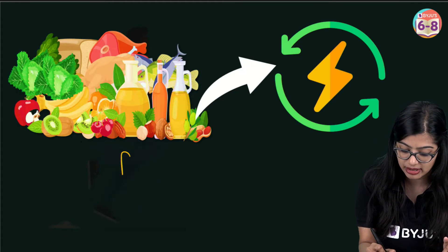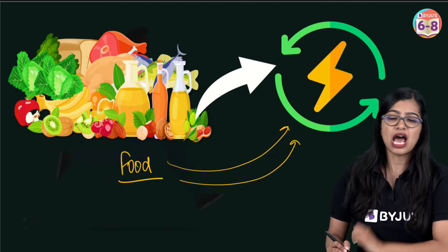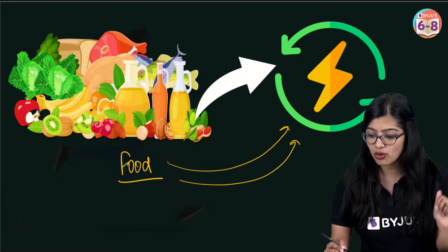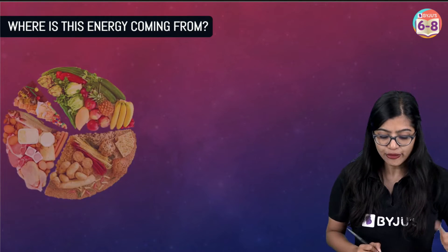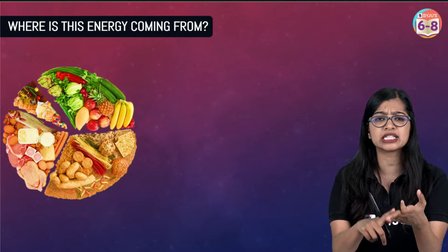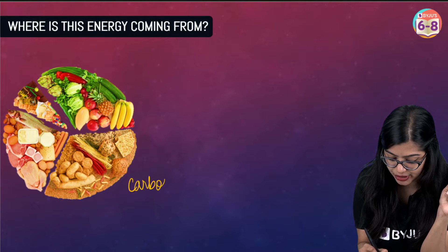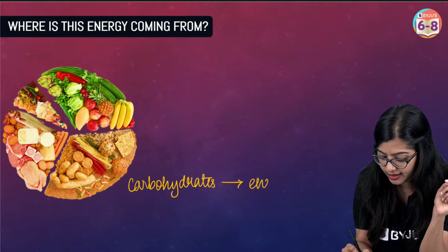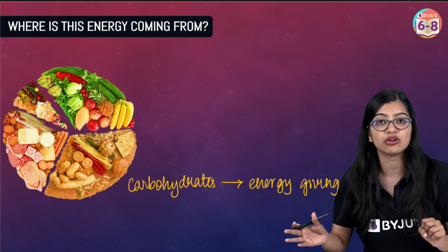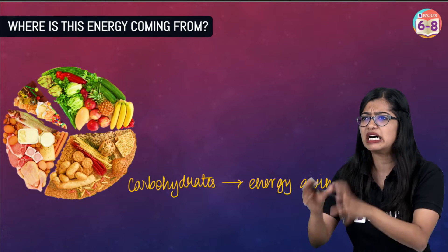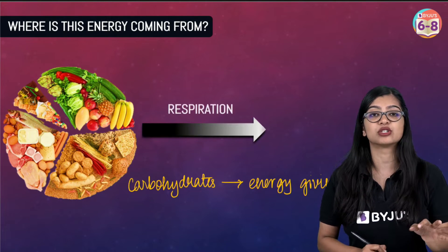The fuel that drives our body is nothing but the food that we eat. The food that we eat is basically converted into energy — we've been learning about this from our lower grades. But what we are going to understand is how is this energy coming from? The food we eat consists of various nutrients: carbohydrates, proteins, fats, vitamins and minerals. The nutrient we are concerned with is carbohydrates. When carbohydrates are broken down, they release energy, and this whole breakdown process is what we call respiration.